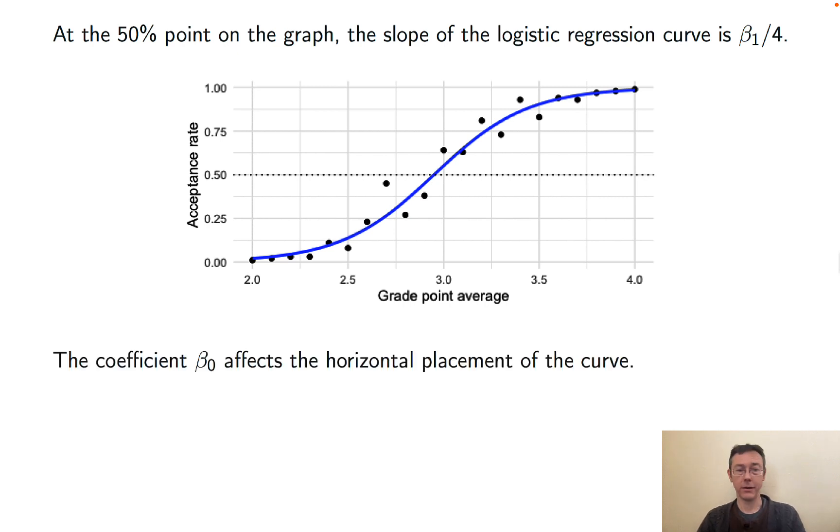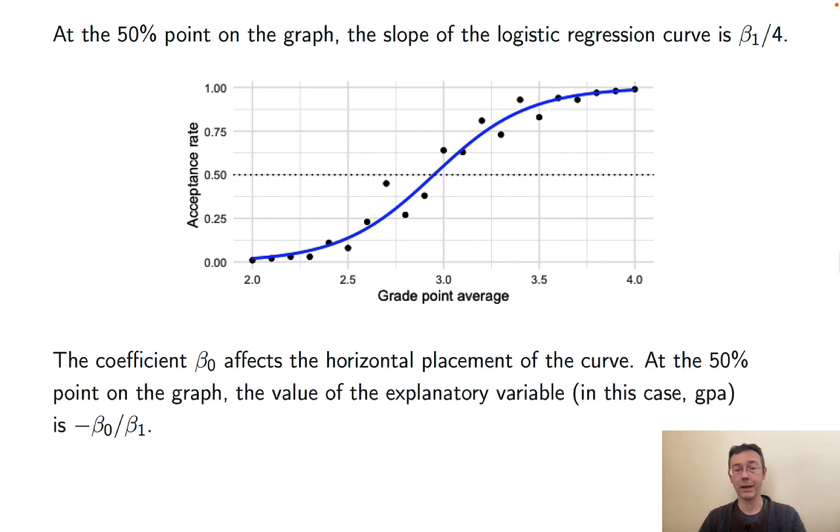The coefficient beta 0, on the other hand, the sort of intercept term, is affecting the horizontal placement of the curve, how far left and right it goes. At that 50% point on the graph, where that dotted line is above, the value of the explanatory variable, the x value, which in this case is GPA, is negative beta 0 over beta 1.